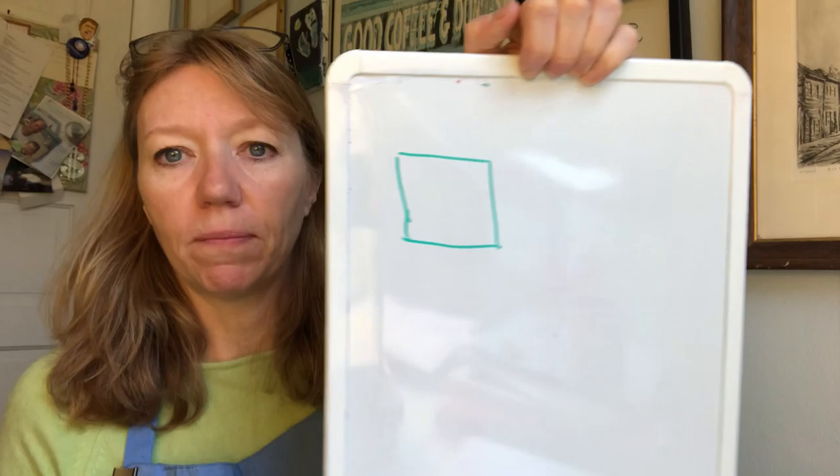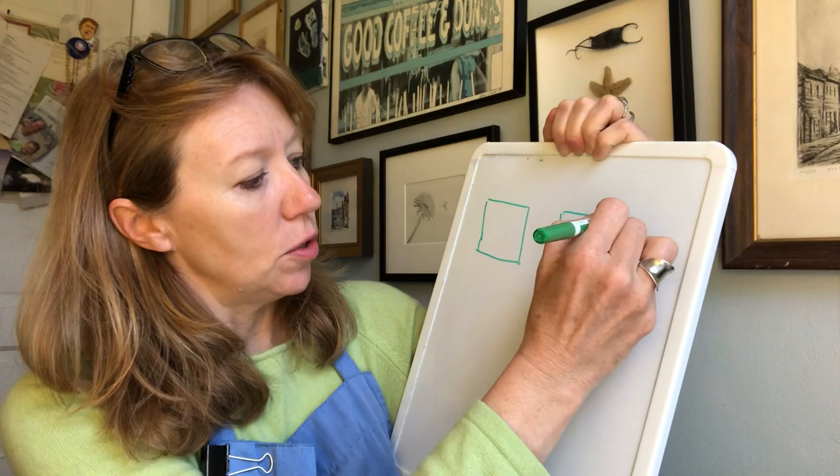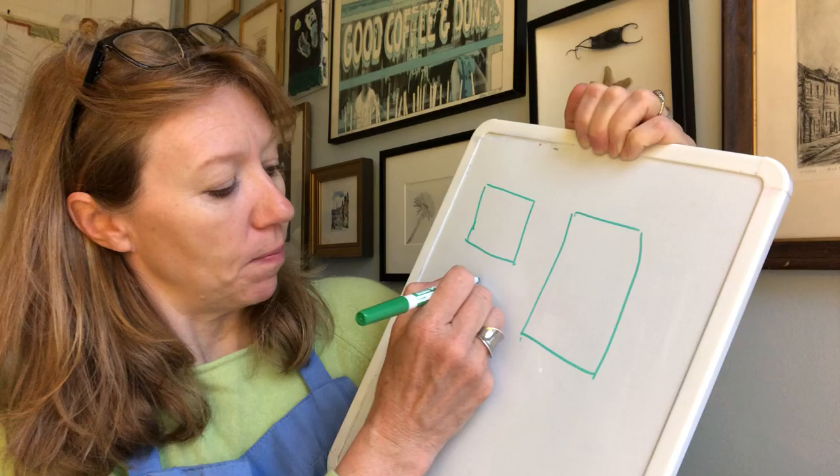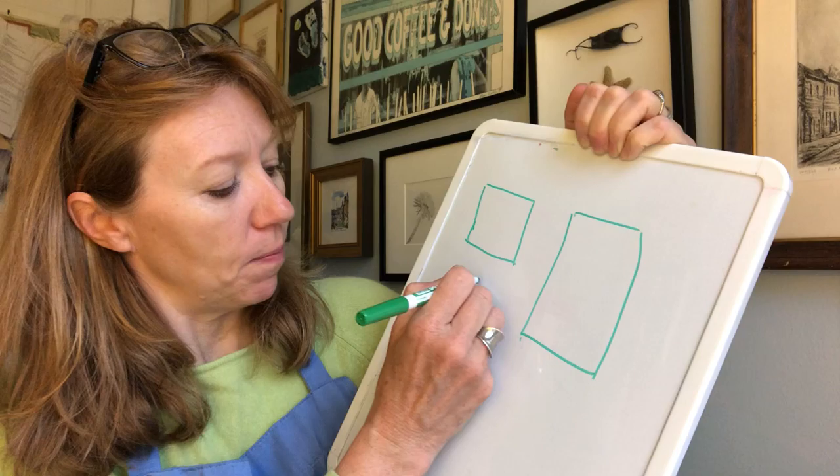First I'm going to draw a square. It's a little crooked, but that's a square — that's a geometric shape. You could also use rectangles to make your building — that is also a geometric shape. And another shape that you can use when you're making your building is a triangle. So a square, a triangle, and a rectangle — those are all called geometric shapes and you can use those when you are making your building.